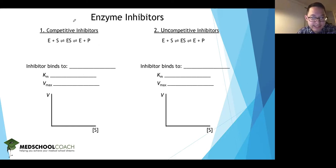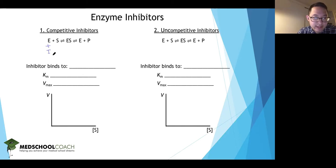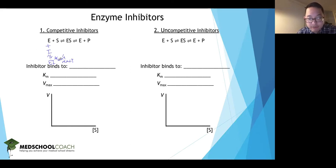Let's start off with the easiest one: the competitive inhibitor. By its name, it means it competes directly with the substrate to get to the enzyme. If you add the inhibitor to the solution, it can bind to the enzyme to form an enzyme-inhibitor complex. The problem is that it can't react, and what we want is the enzyme to bind to the substrate to form the enzyme-substrate complex and then react.